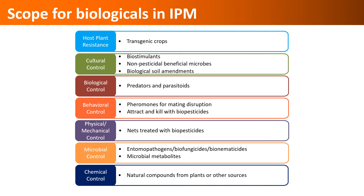Various chemical molecules from plants, microbes, or other sources are also very popular against various pests. Biologicals are an integral part of every IPM option and can be effectively used at every stage of crop production, with or as an alternative to synthetic inputs.